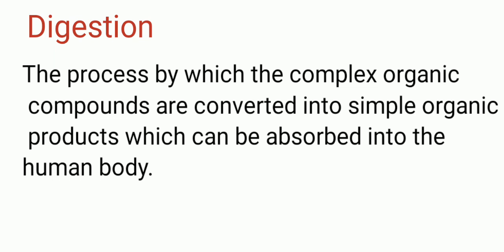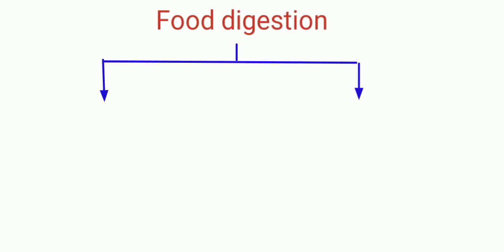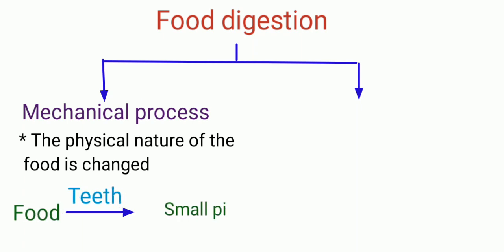Here the complex substances are converted into simple products which can be absorbed by the blood in our body. There are two processes involving food digestion. During the mechanical process, the physical nature of the food is changed, for example breaking down of food into small pieces by the teeth.